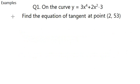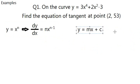This is an example that I'm going to show you - to find the equation of a tangent line at point (2, 53) on the curve y equals 3x to the power of 4 plus 2x squared minus 3. Disclaimer, this question is actually made up by myself, so this turns out to be quite an interesting result, but it doesn't matter. What you need to remember is how to differentiate and what is the general equation for straight lines.